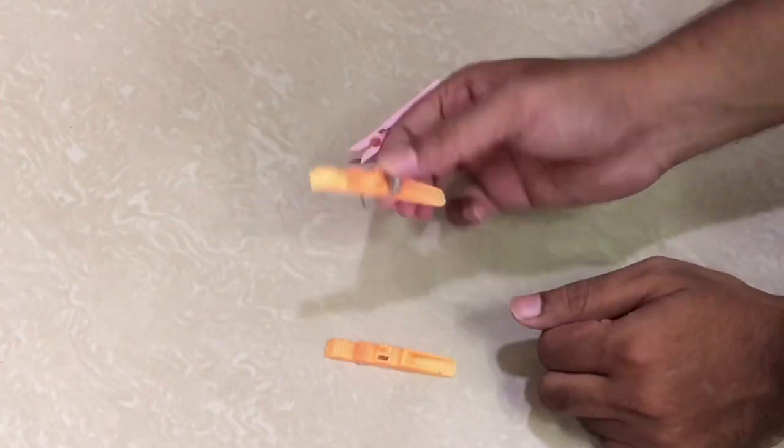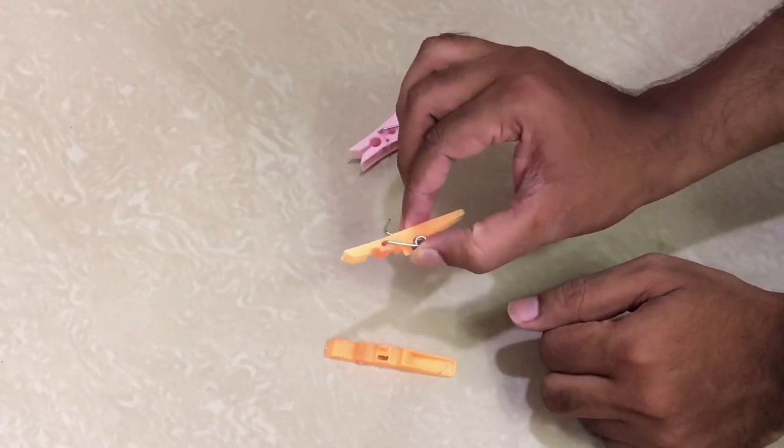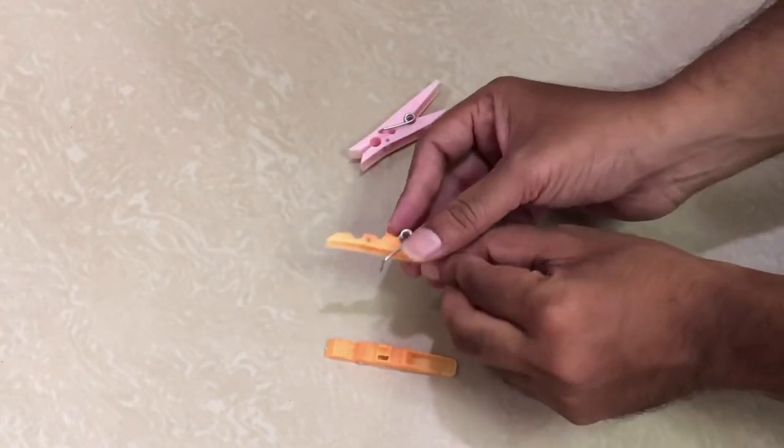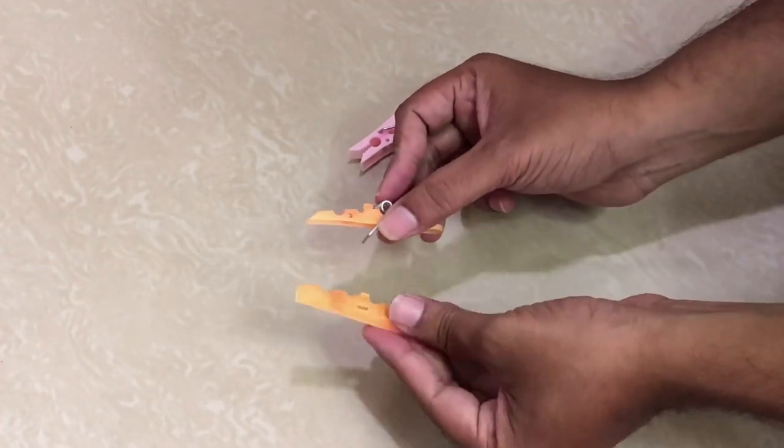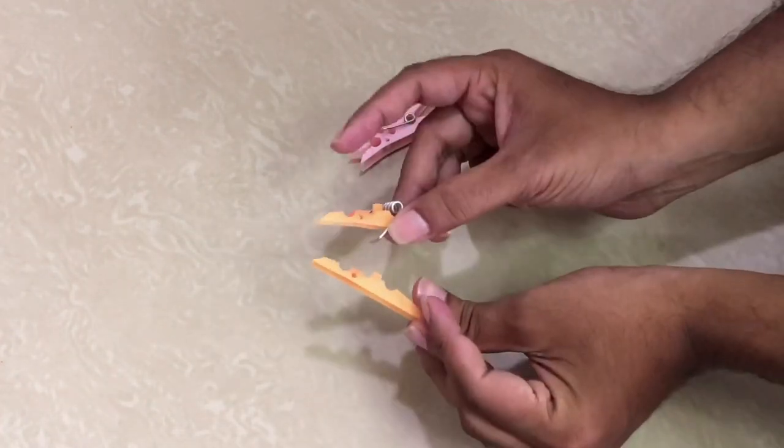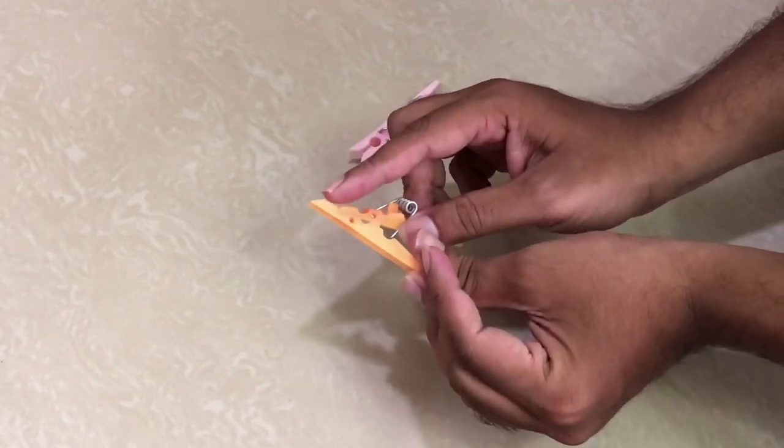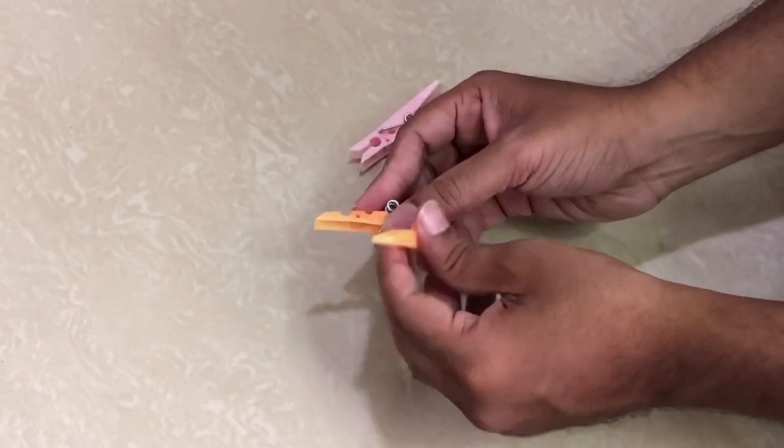Now this is the first step. The second step is to take the other piece upside down. First the head, then put it inside.